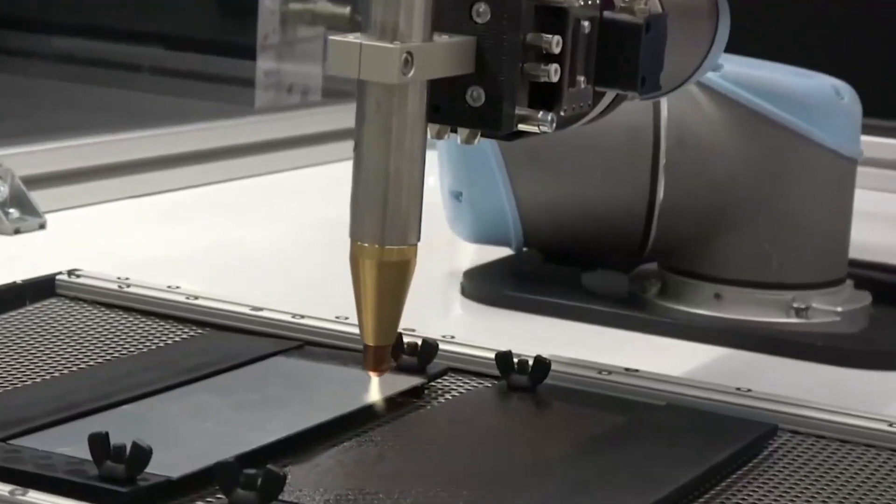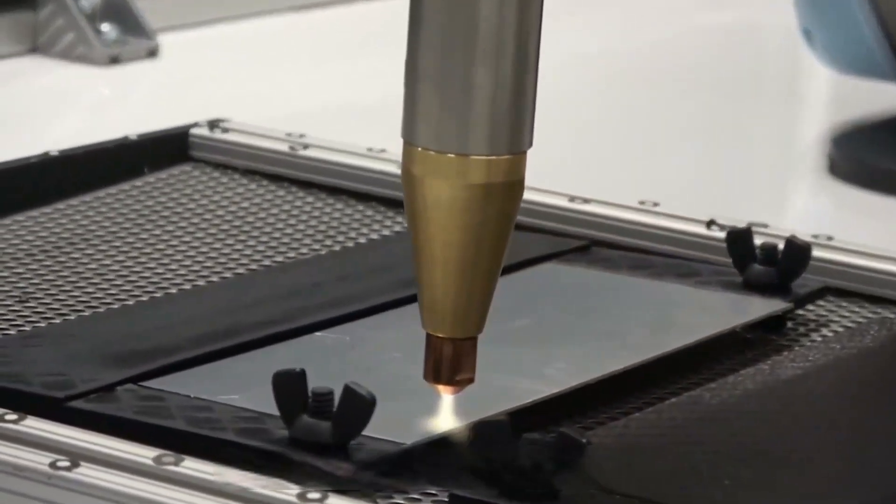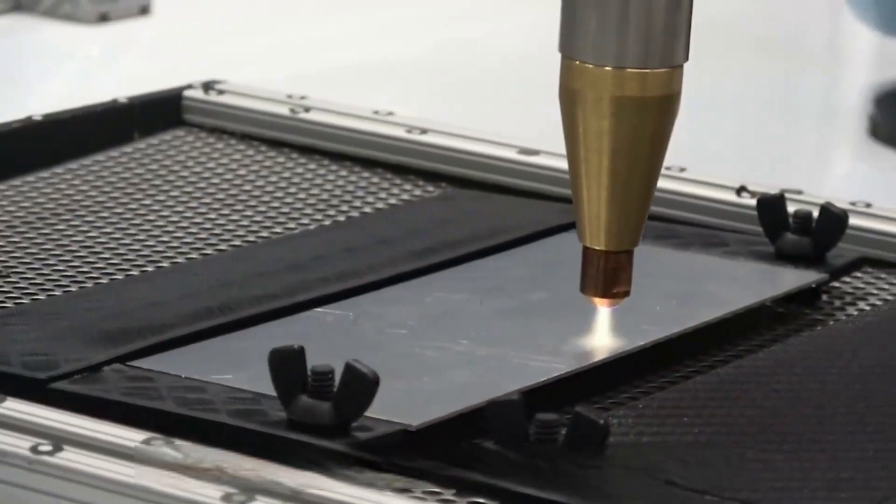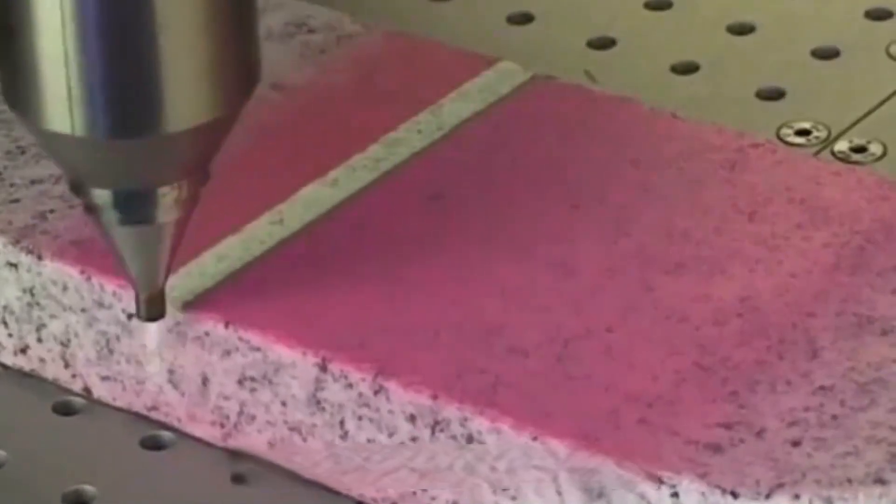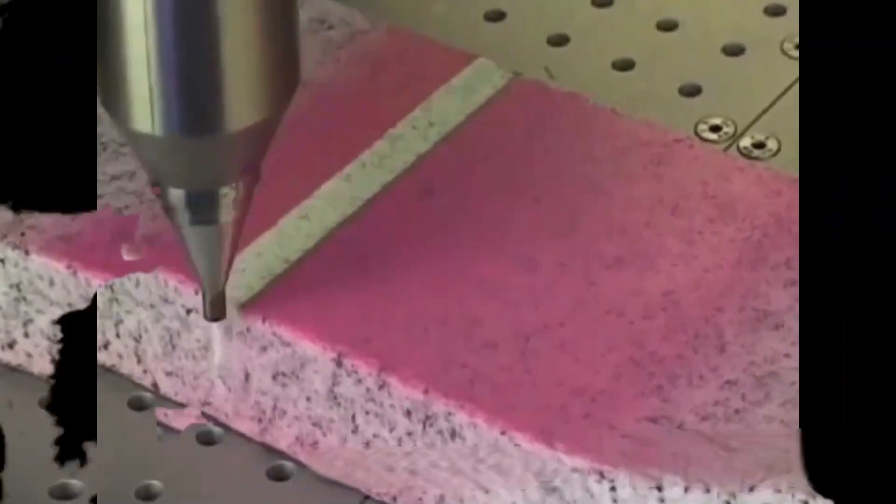Plasma cleaning uses equipment to emit plasma to achieve effects that conventional cleaning methods cannot achieve. Plasma cleaning can be applied to metals, ceramics, plastics, and other materials.